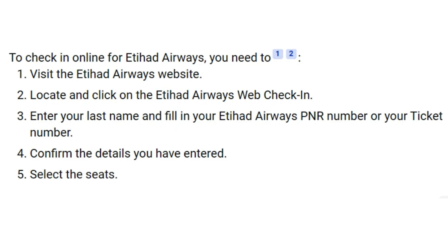Enter your last name and fill in your Etihad Airways PNR number or your ticket number. After that, confirm the details you have entered, then select the seats and book your flight with Etihad Airways. That's basically how you can do a web check-in on Etihad Airways. Hope you liked the video, thanks.